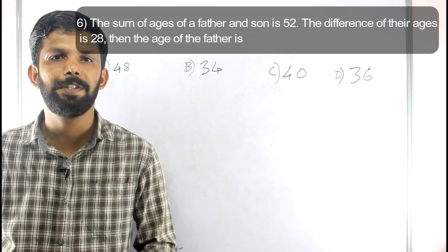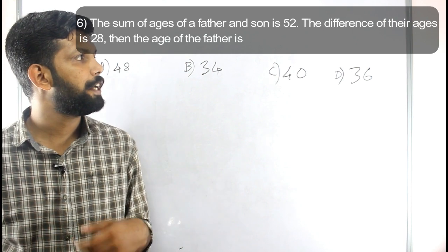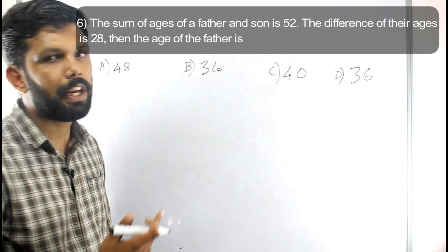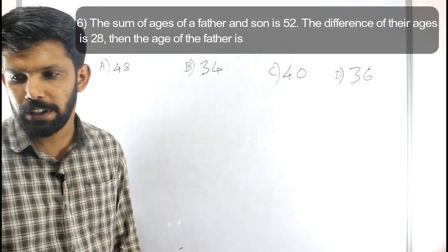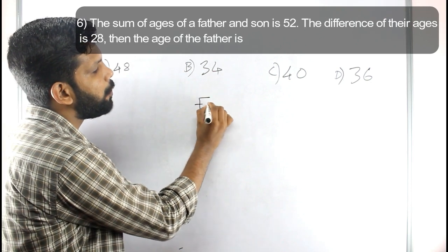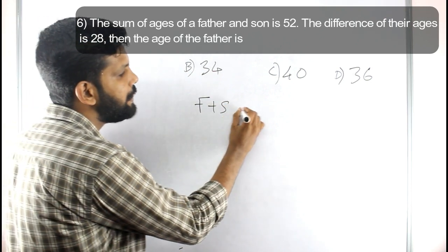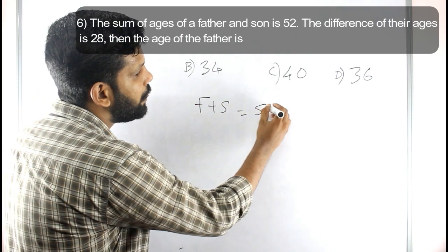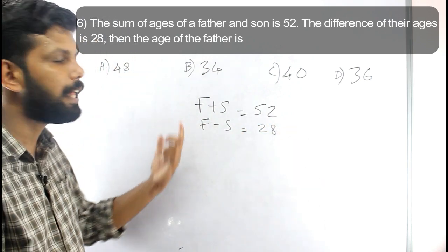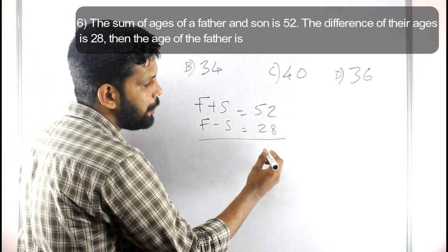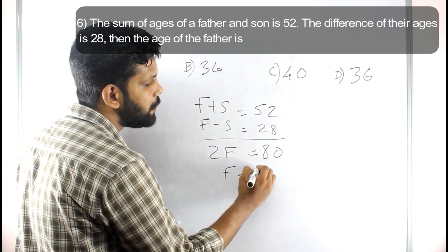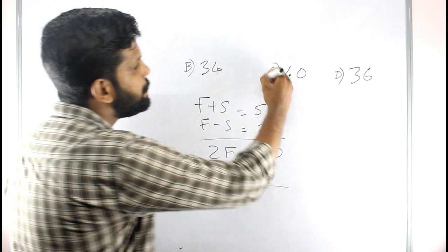The next question: the sum of the ages of a father and son is 52, and the difference between their ages is 28. Find the age of the father. Let F be the father's age and S be the son's age. F plus S equals 52, and F minus S equals 28. Adding these two equations: 52 plus 28 equals 80, S cancels out, so 2F equals 80, which means F is equal to 40.